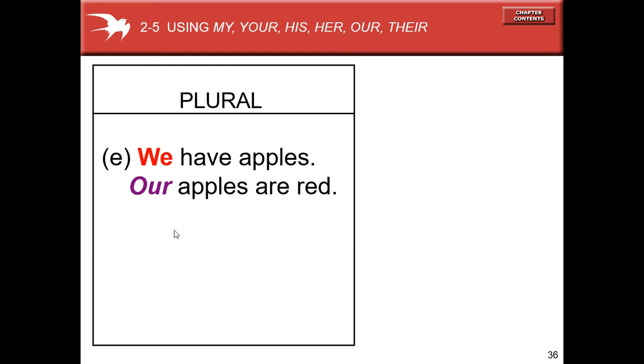We have apples, our apples are red. Our is a possessive adjective. You, talking to a group, for example, have an apple. Your apple is red. Your is the possessive adjective.